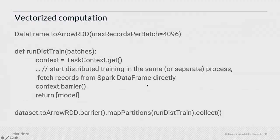Actually, I have another code example over here. For rdd to Arrow, if you're interested, this is another example of how that will be executed in the future with vectorized computing.